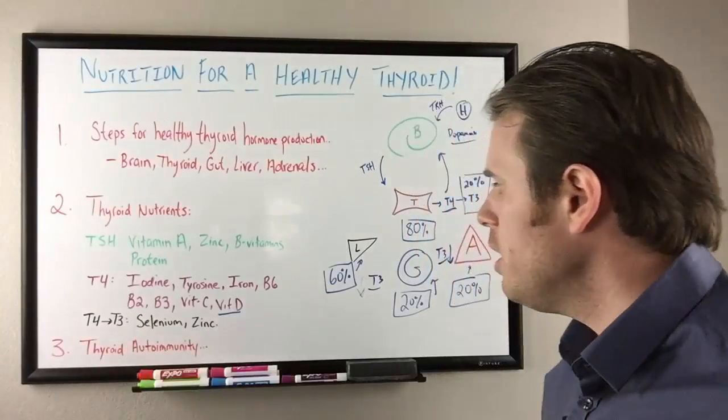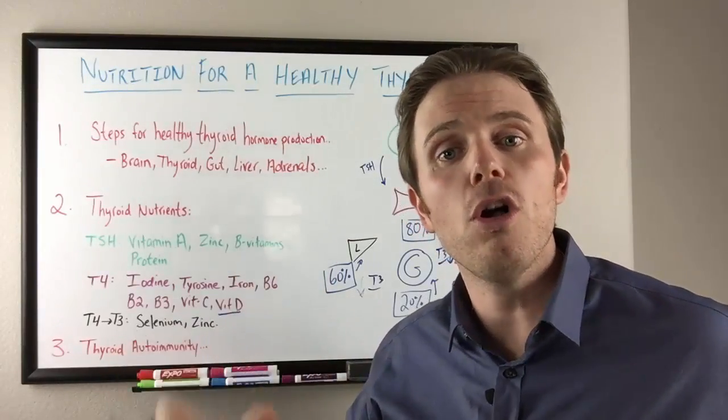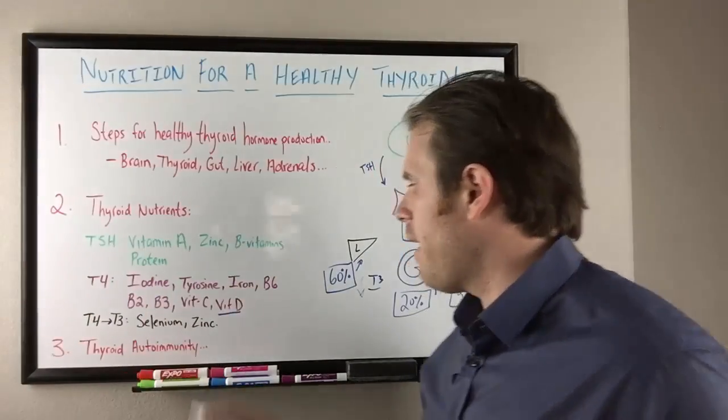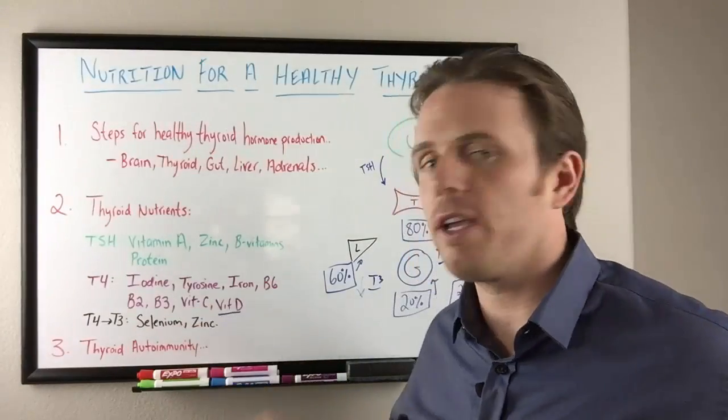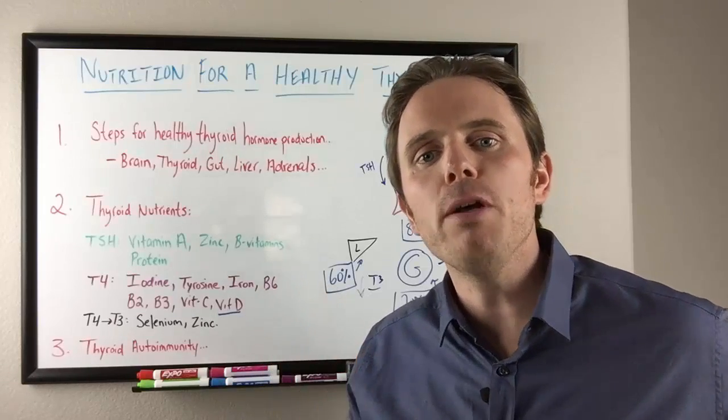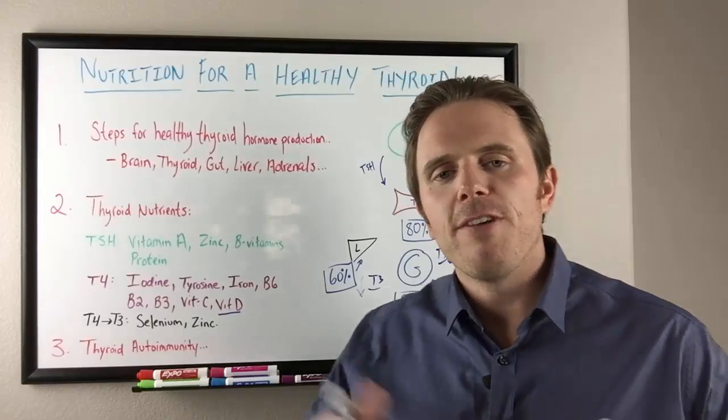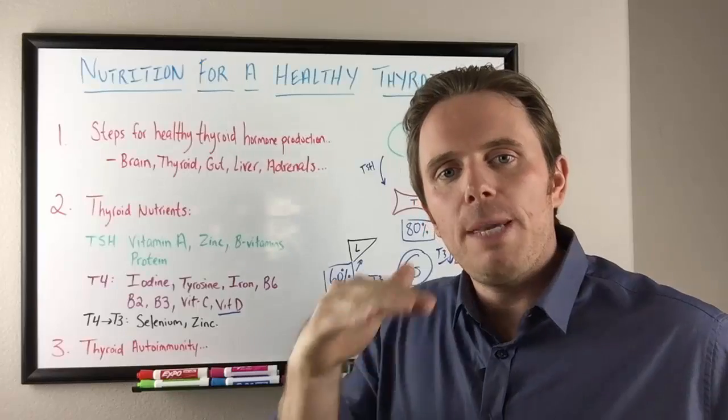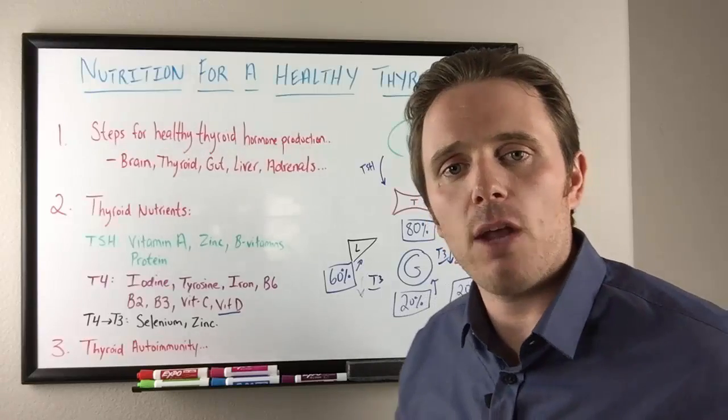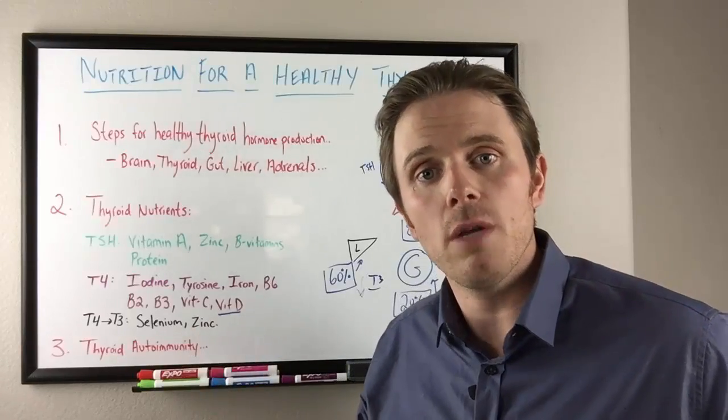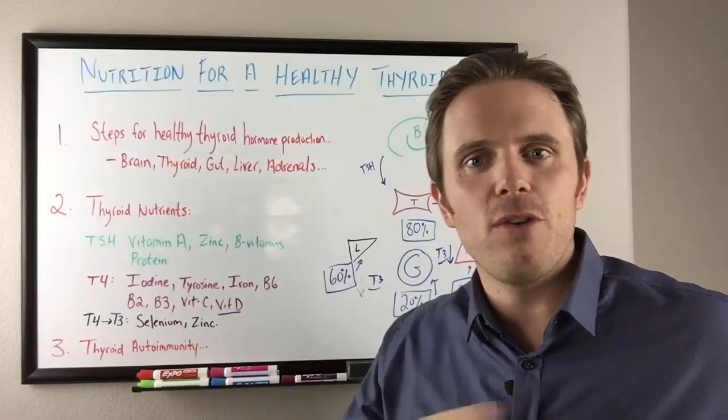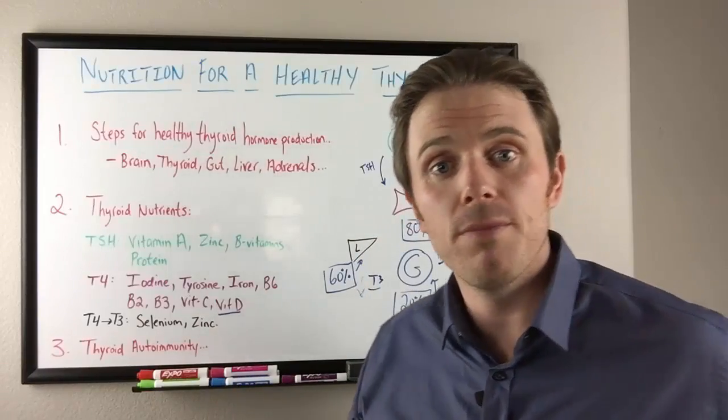We already talked about the nutrients needed for T4 to T3. That selenium is essential also for the autoimmune effects of helping to neutralize the hydrogen peroxide into water. And then zinc is also very important. Zinc is important for thyroid conversion. Zinc is also essential for sex hormone production, making testosterone essentially. And it's an important building block for making hydrochloric acid. If we don't have hydrochloric acid levels adequate enough, we won't keep that nice low pH in the stomach. If we don't have that low pH, we won't be able to break down protein and fat adequately. And we'll have a harder time ionizing minerals.